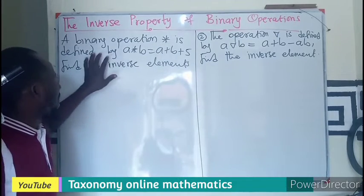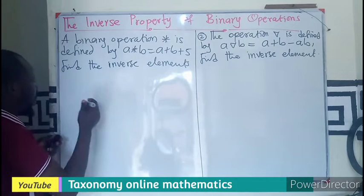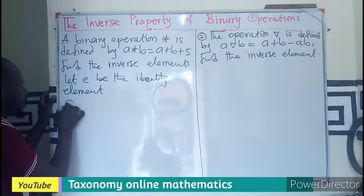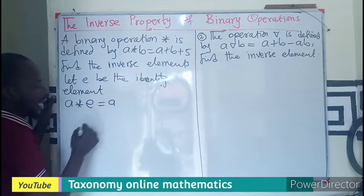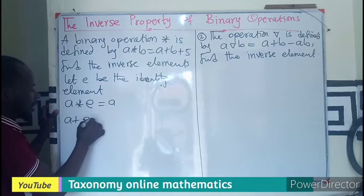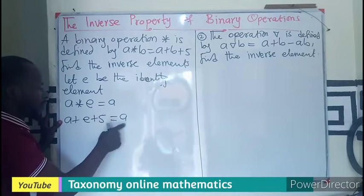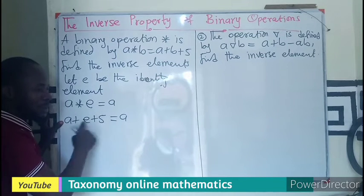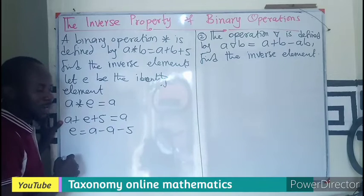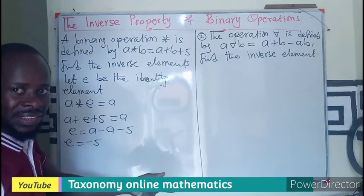A binary operation star is defined by a★b = a + b + 5. Our task is to find the inverse. First, find the identity element: let E be the identity element, so a★E = a. Using the definition: a + E + 5 = a. We subtract a and 5 from both sides, so E = a − a − 5, giving us E = −5. The identity element is −5.